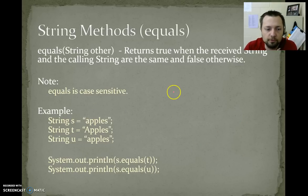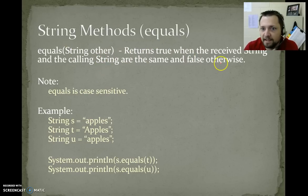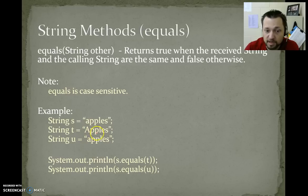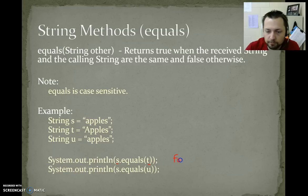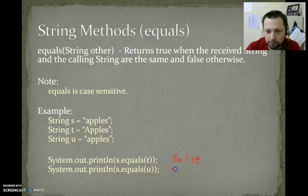The next method is equals — we've already used this one before. You send it a string. It returns true if the string you sent is exactly the same as the string that's calling the method. Notice it's case sensitive. So we have s which is "apples", t which is "Apples" with an uppercase A, and u which is lowercase "apples". s.equals(t) — apples versus Apples, those are different because this is case sensitive, so our first output would be false. Then s.equals(u) — does apples equal apples? Yes, so we get true.